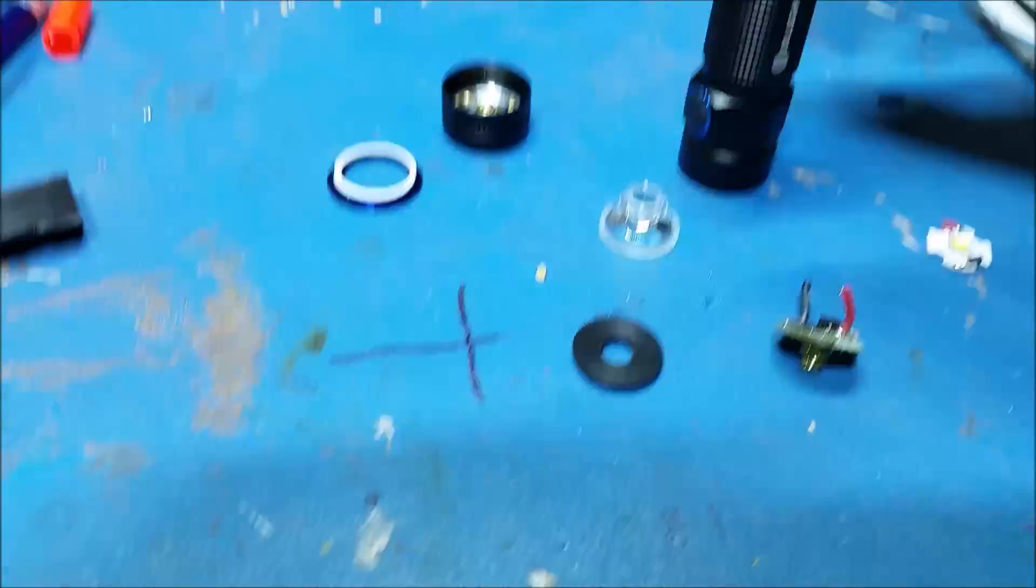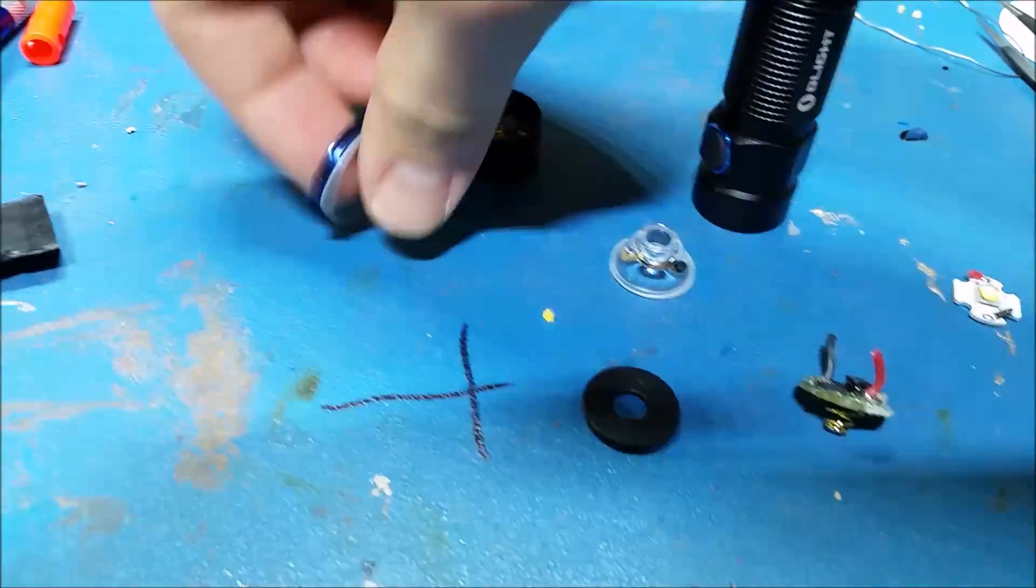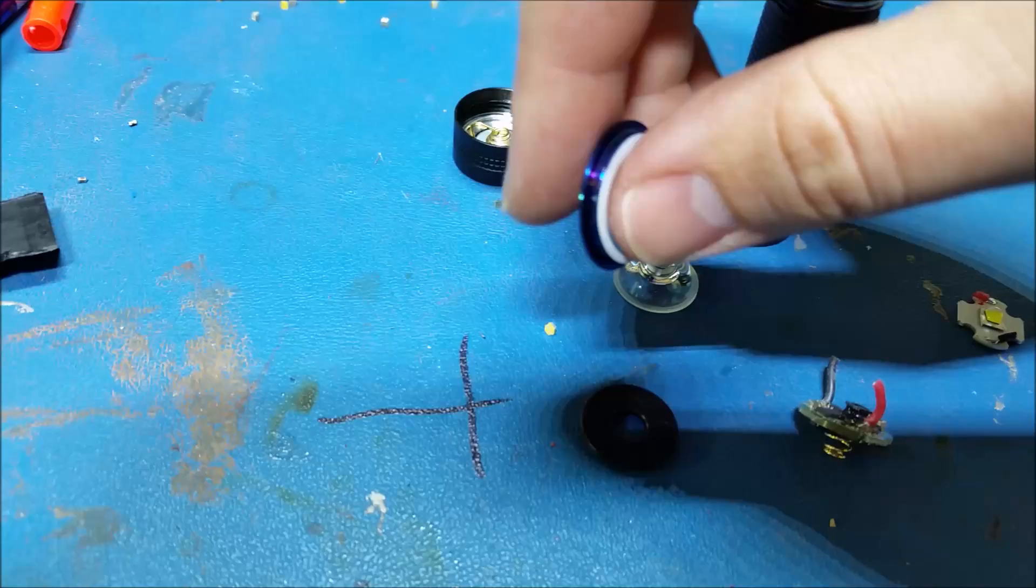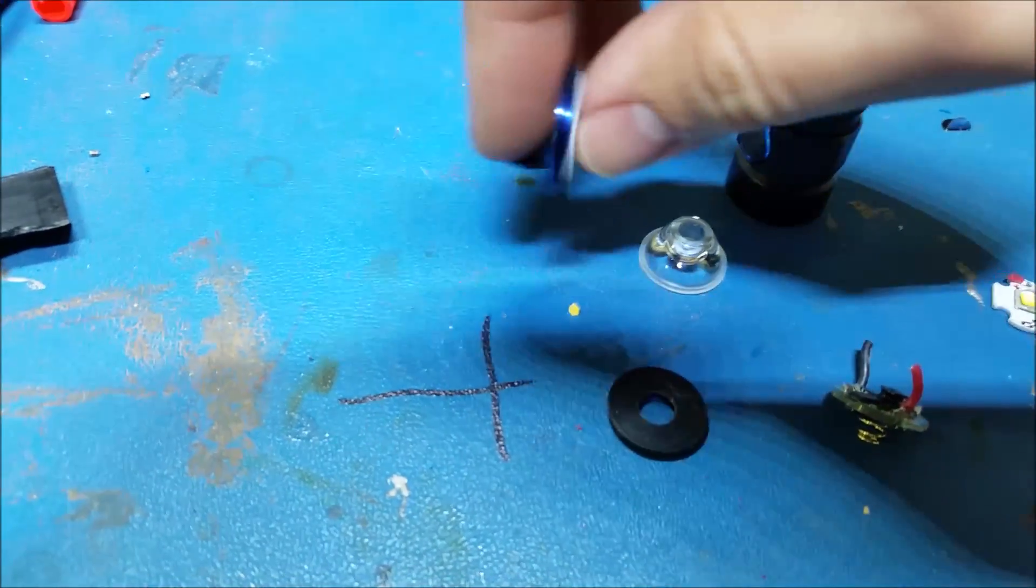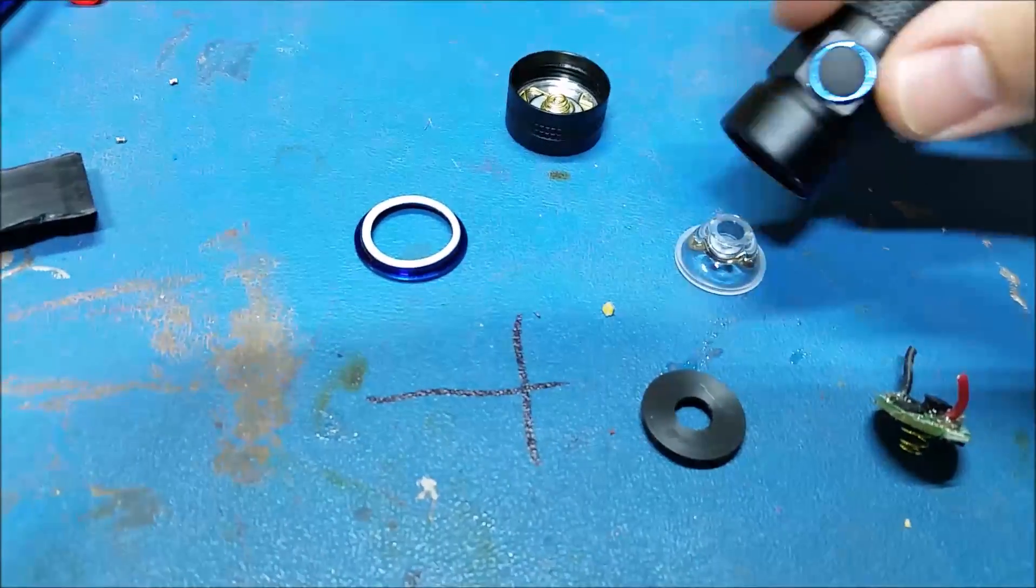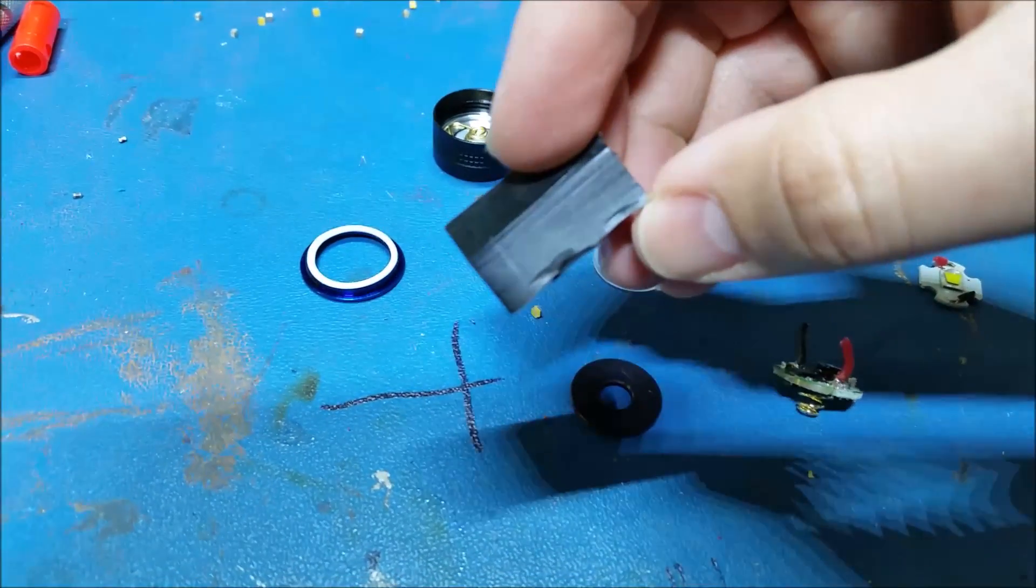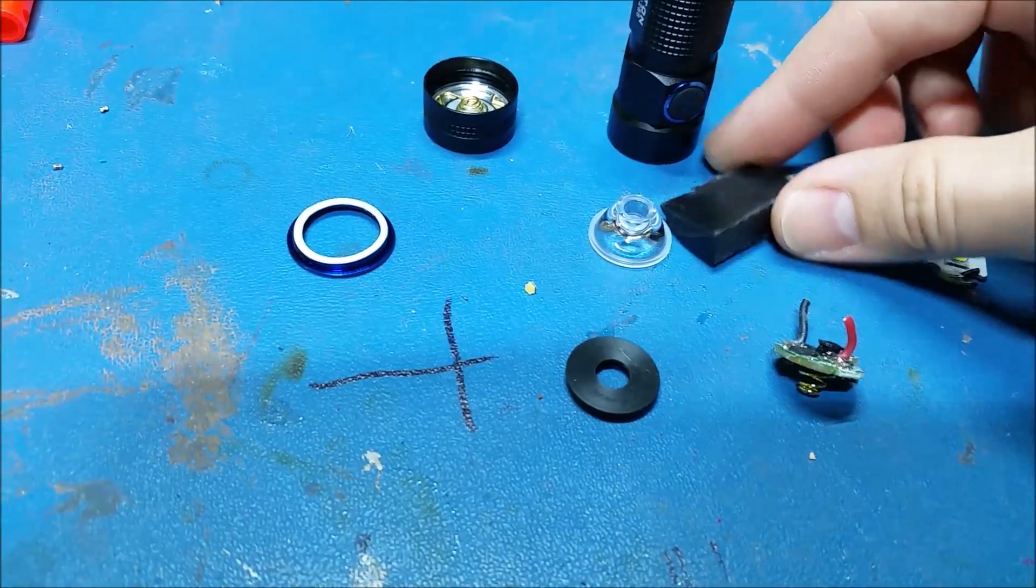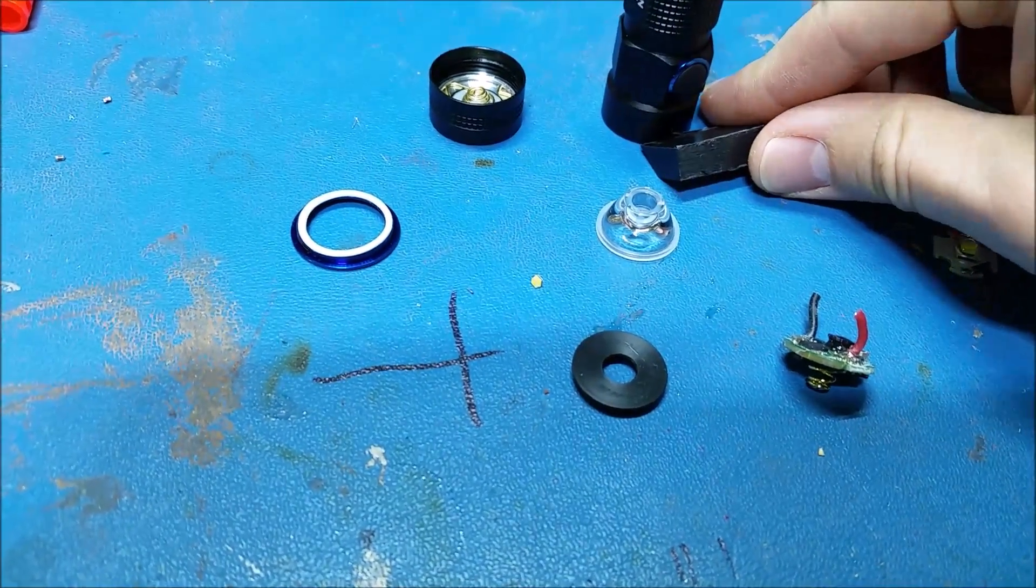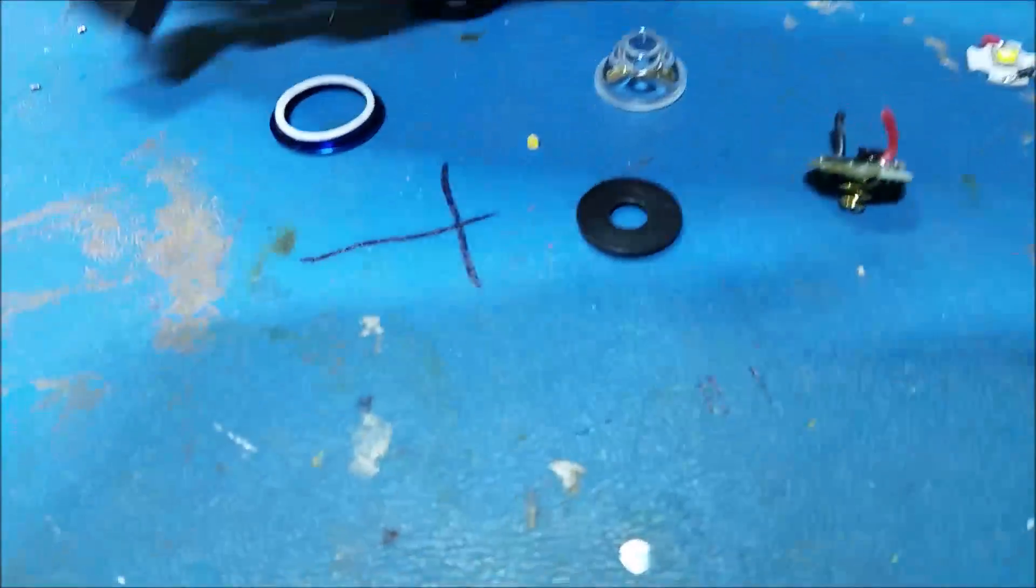The S1 is a little bit trickier to get apart than the S10 because they've chosen to press fit this bezel into the body instead of threading it. So I cut this wedge out of Delrin and used a vice to press it into the gap between the bezel and the body and work my way around the light. I was able to get it off without marring any of the surfaces.